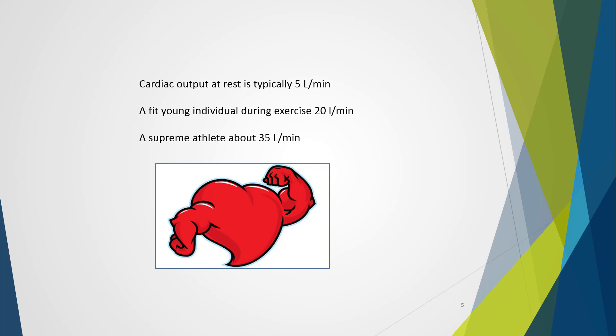Cardiac output at rest is typically about 5 liters per minute. In a fit young individual during exercise we may see this increase up to 20 liters per minute. And in a supreme athlete we may even see it move up to 35 liters per minute.